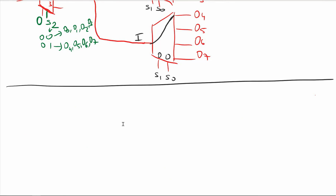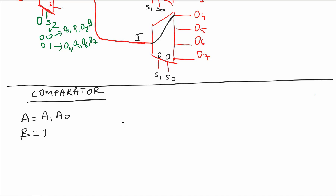Our new subject is comparators, so we are still looking at combinational circuits. This time we will be looking at the comparator. Let's say I have a signal A, a two-bit signal A1 and A0, and another variable B, also a two-bit signal B1 and B0. If I would like to compare them, I have a comparator S0 comparing A and B.